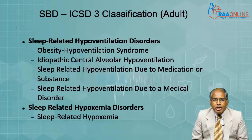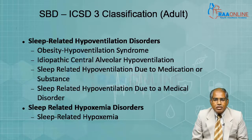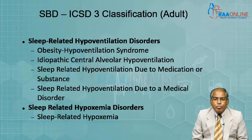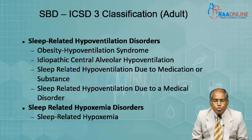We have the sleep-related hypoventilation disorders. The main and foremost one is obesity hypoventilation syndrome. The others include idiopathic central alveolar hypoventilation, sleep-related hypoventilation due to medication use, and sleep-related hypoventilation due to medical disorder. The last category is sleep-related hypoxemia, which has only one subgroup under it, and there is significant overlap between the hypoventilation and the hypoxemia disorders.